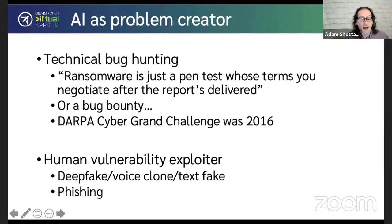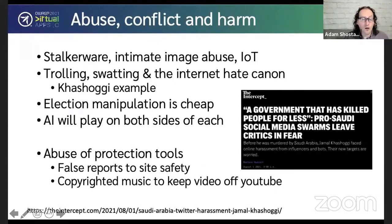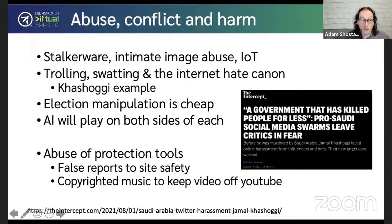We're also going to see AI exploiting human beings — attacks through the systems. We're going to see things like deepfakes, voice clones, and text fakes being used in phishing. We're already starting to see that, and those are going to scale in ways we are ill-equipped to manage. Examples include stalkerware, the abuse of intimate imagery — some of which is faked but has a psychological effect on the person whose image is faked. We see IoT being abused by abusive domestic partners who are forced to leave but still have access to the thermostat. We've got trolling, swatting, and the internet hate cannon. All of these are going to be negatively enhanced by AI, along with election manipulation.